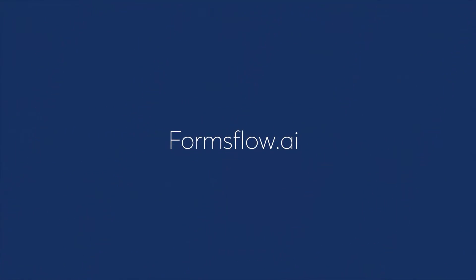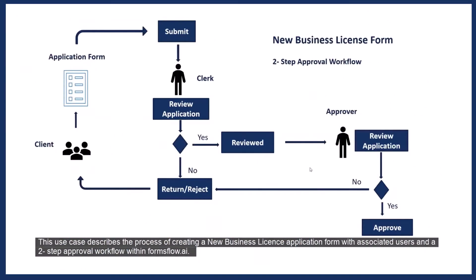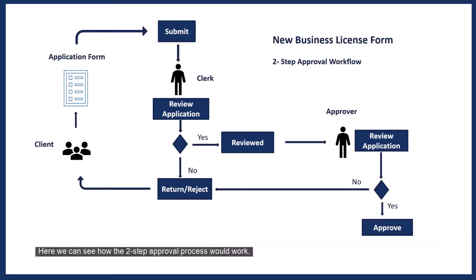This use case describes the process of creating a new business license application form with associated users and a two-step approval workflow within formsflow.ai. Here we can see how the two-step approval process would work. First, the client or the citizen user submits the application form, which starts the workflow.